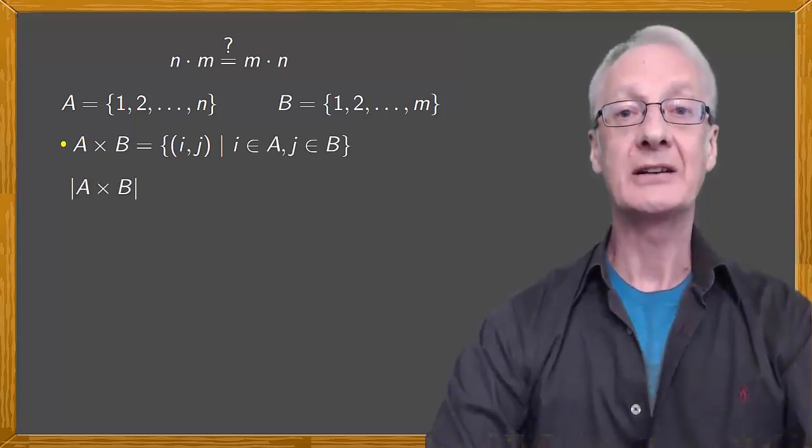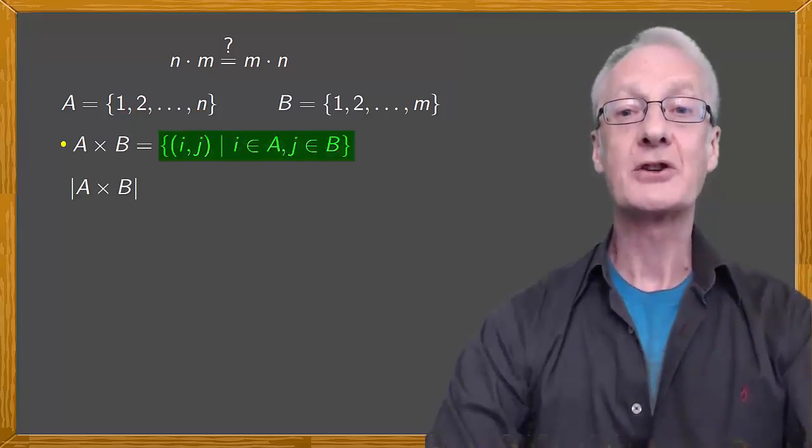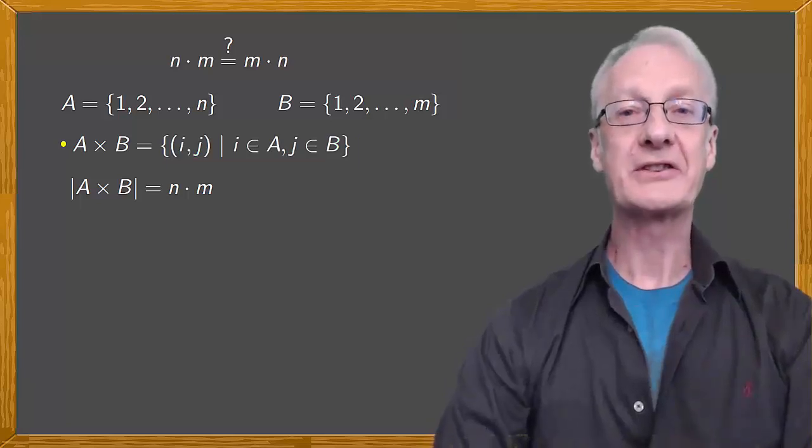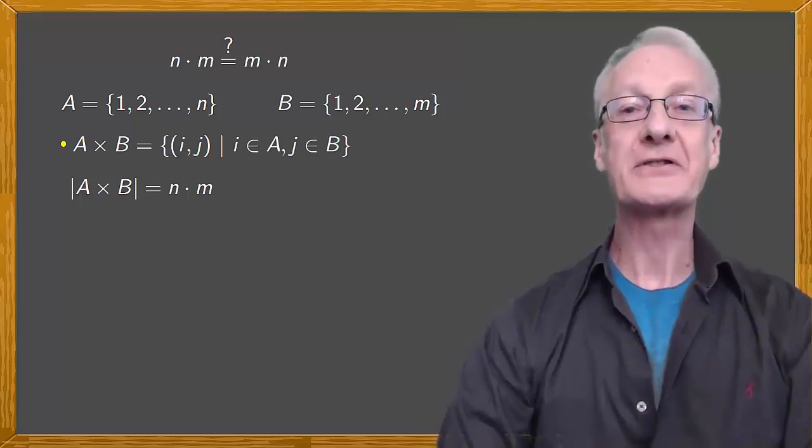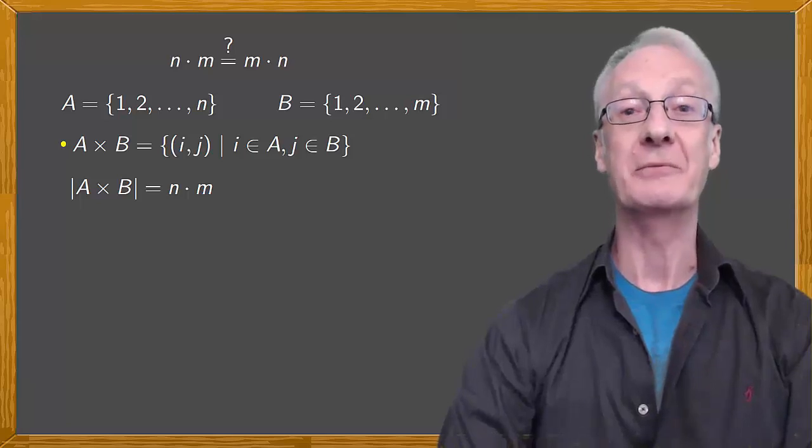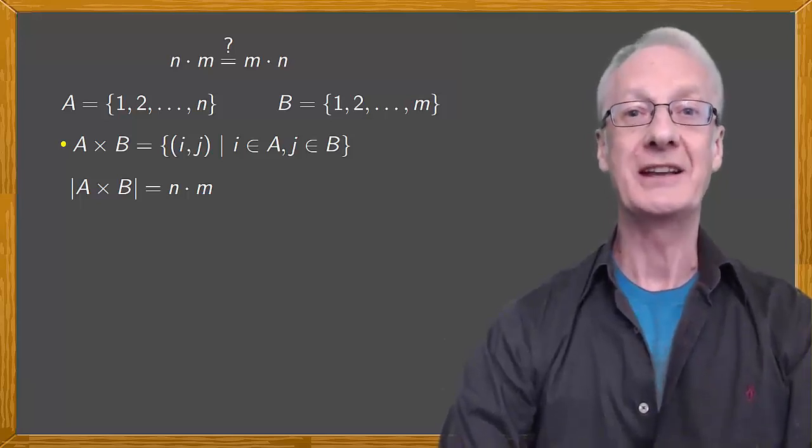The cardinality of A times B, where times means the Cartesian product, is the total number of pairs, where the first element comes from A and the second from B, and is equal to n times m. We're keeping things simple here, but the topics of sets and cardinals belong to set theory, which is a deep and important area of mathematics about which there were some very serious controversies in the last century.